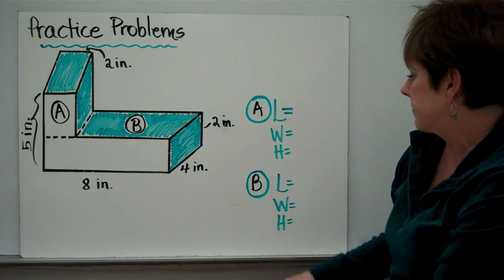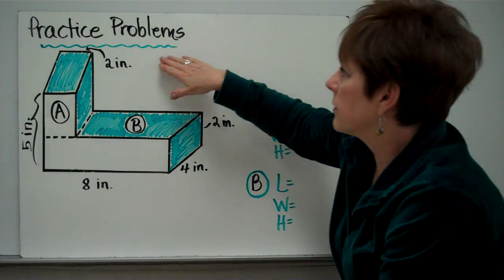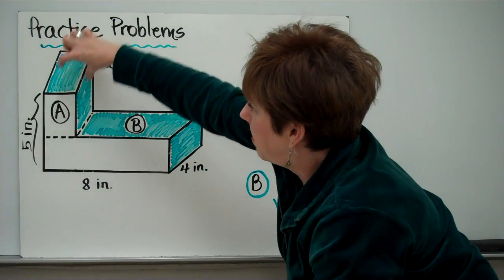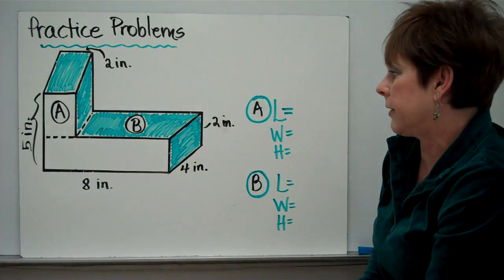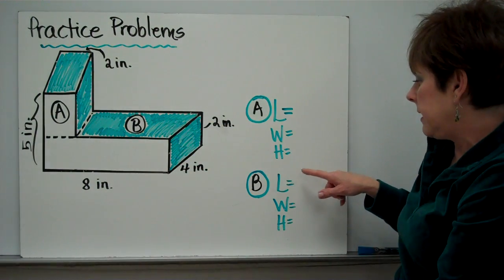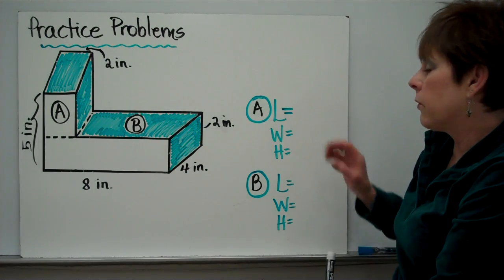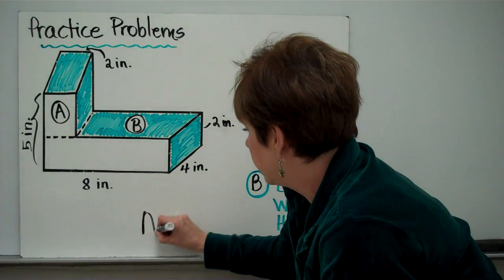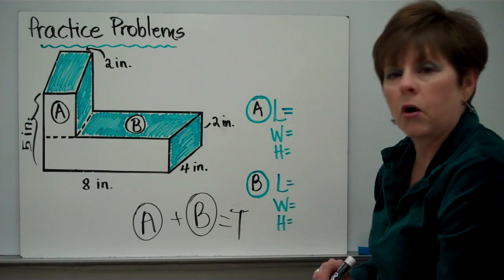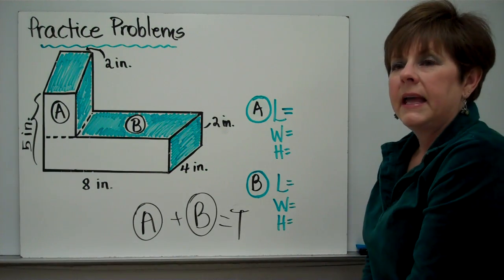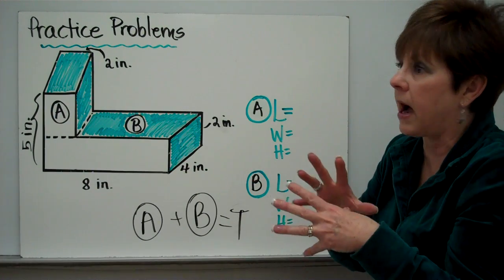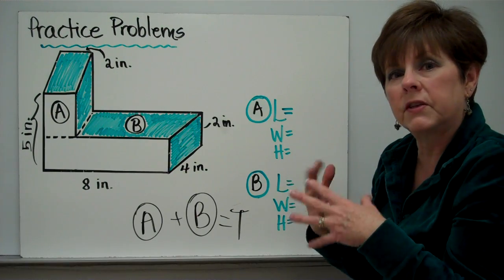Last of all, practice problems. I did a little work on this for you to help. Here are the practice problems — we have all of the measurements here and I've already sectioned it off. We've got section A, which is this part here, and section B, which is this part right here. What you are going to do tonight is find the length, width, and height for A and for B, figure up the volume for each, and then add the volume for section A with the volume for section B to get the total volume for the figure. If you are confused, there's a figure that looks just like this earlier in the video — go and replay it to see how we sectioned it off and determined the different dimensions.